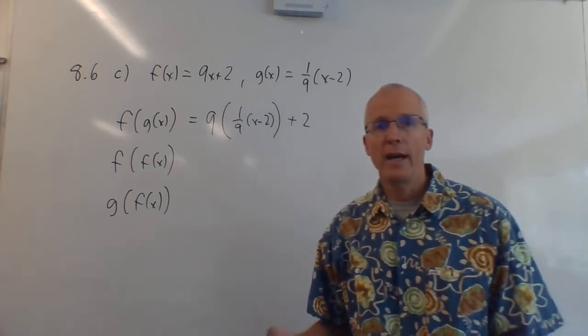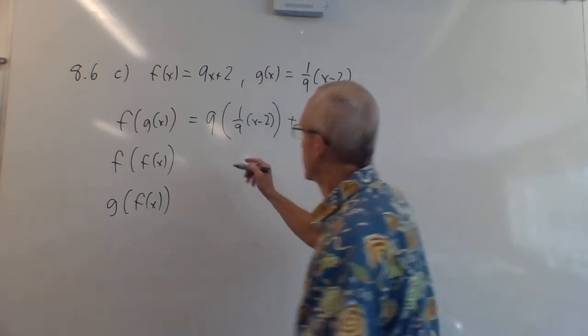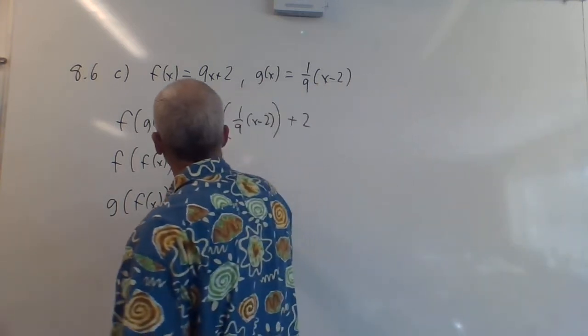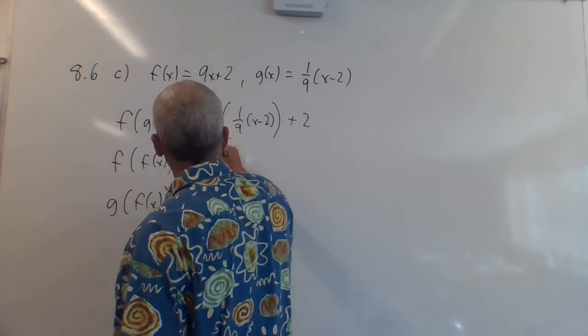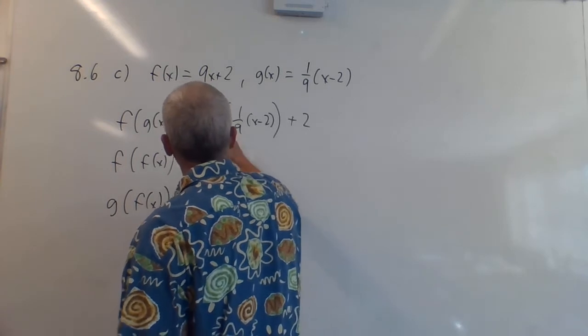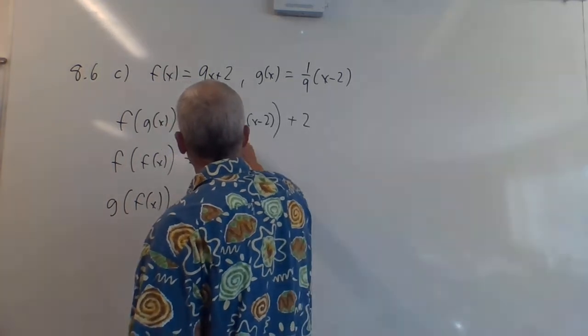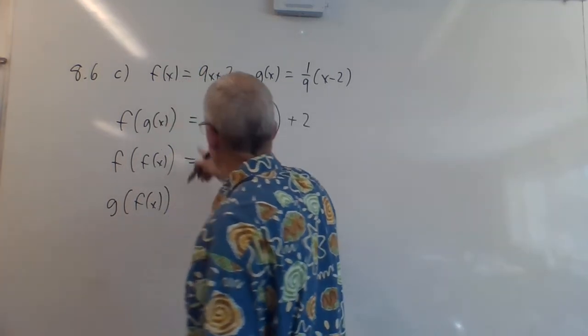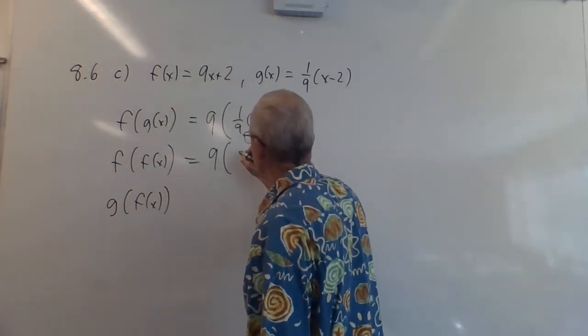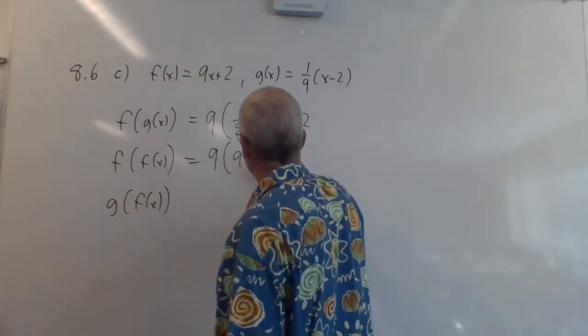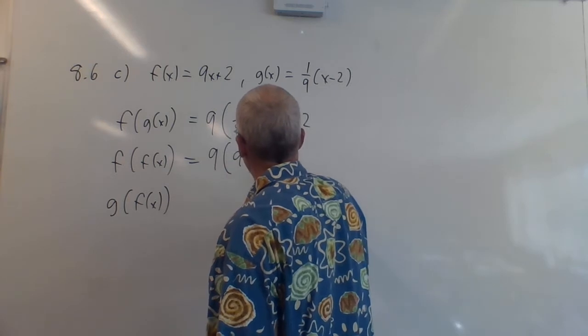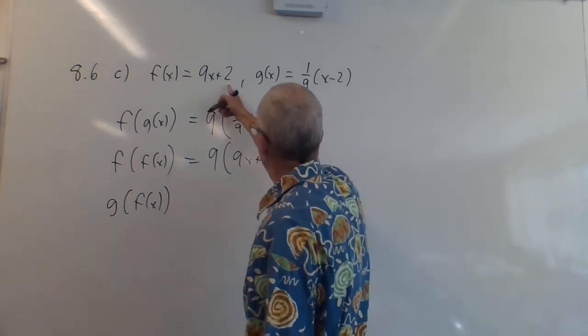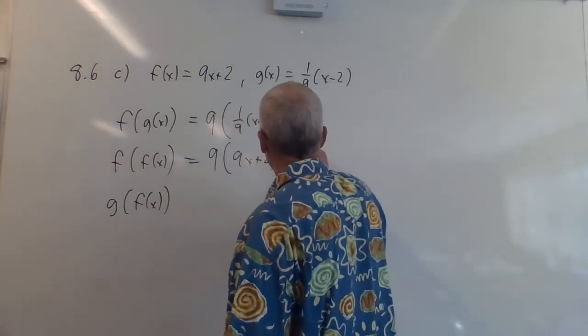Now what's f of f of x? You take f of x, and everywhere there's an x in f of x, you plug in f of x for it — which is 9x plus 2 — and then you finish with plus 2.